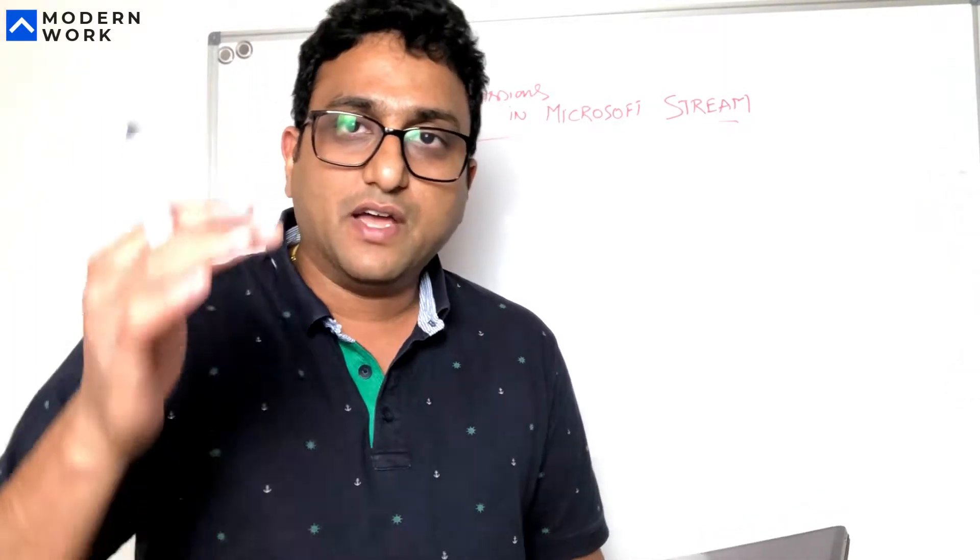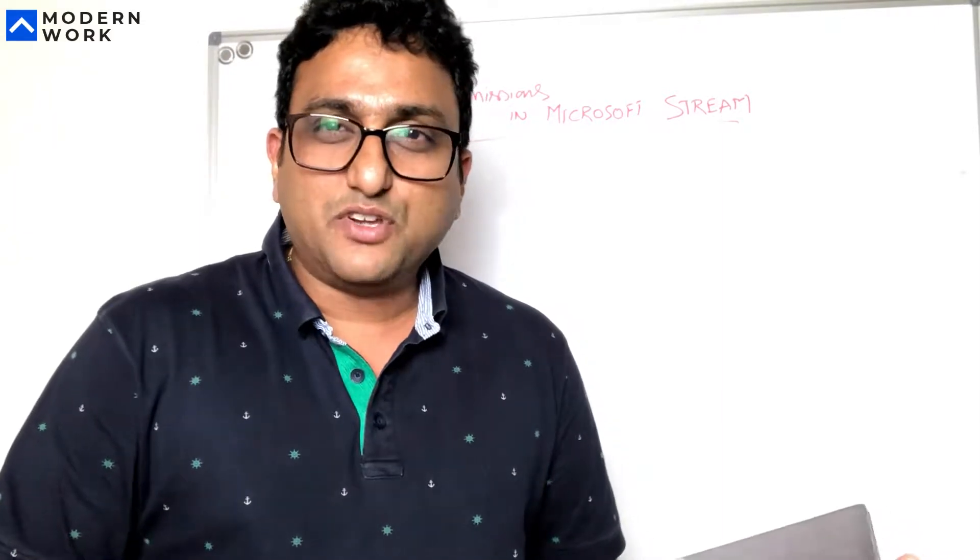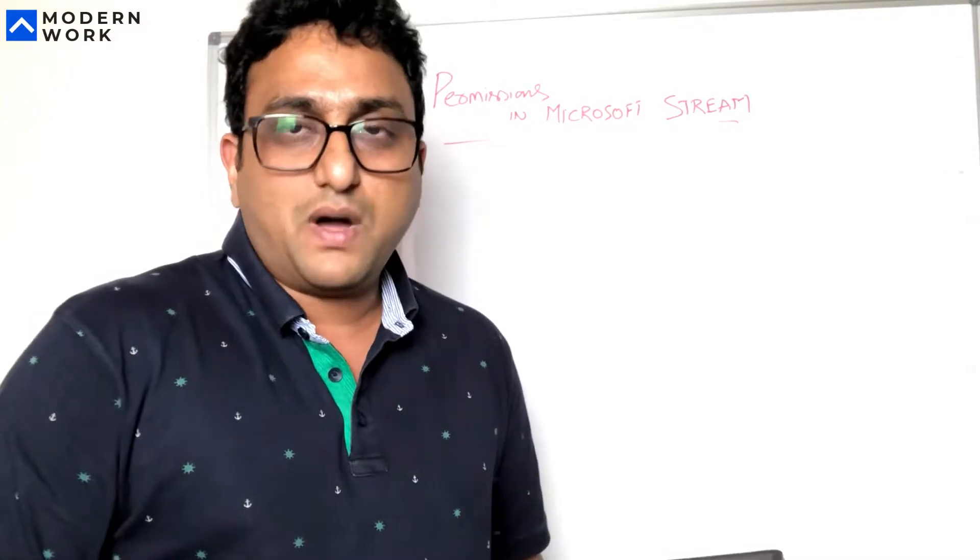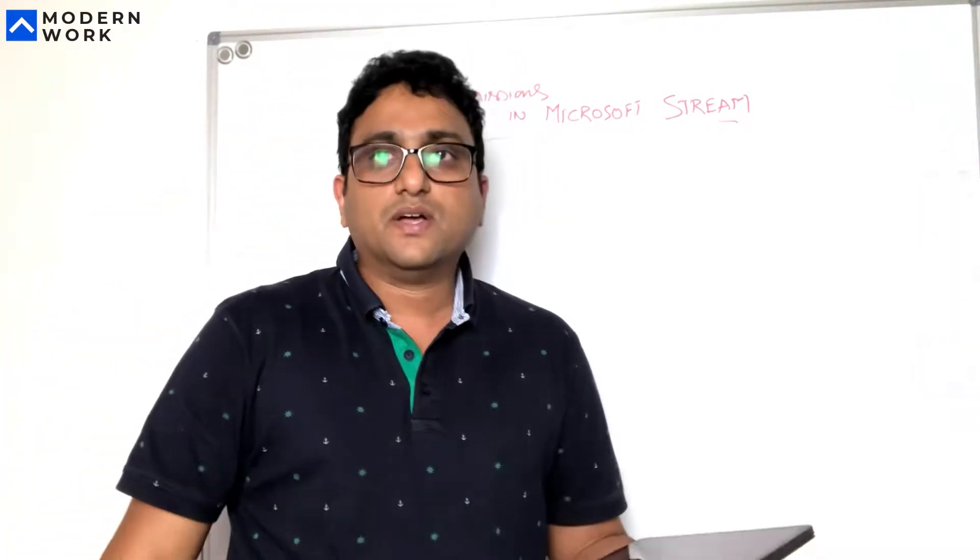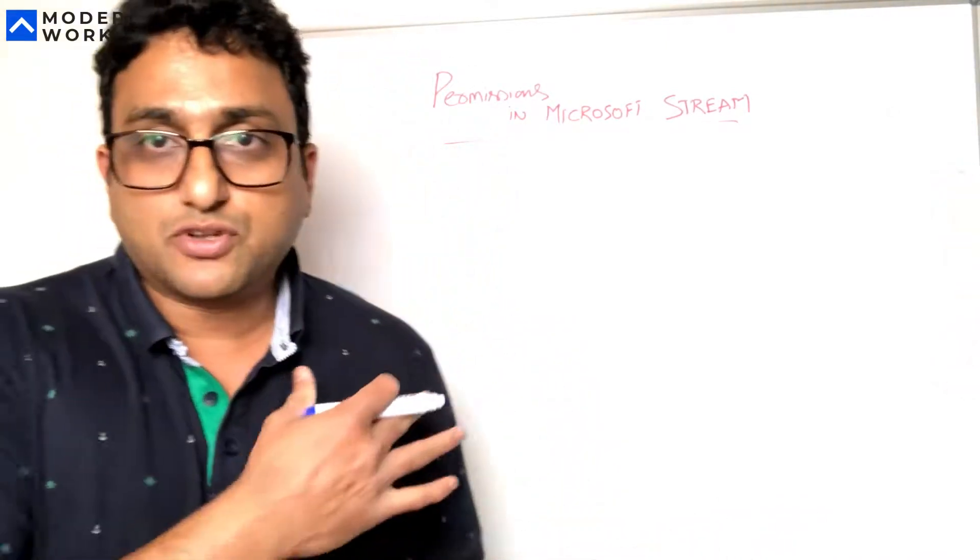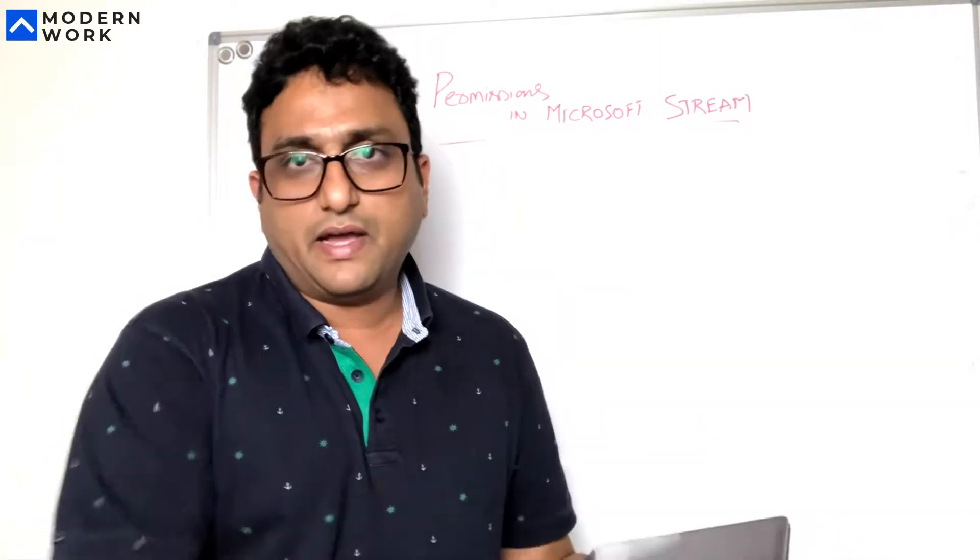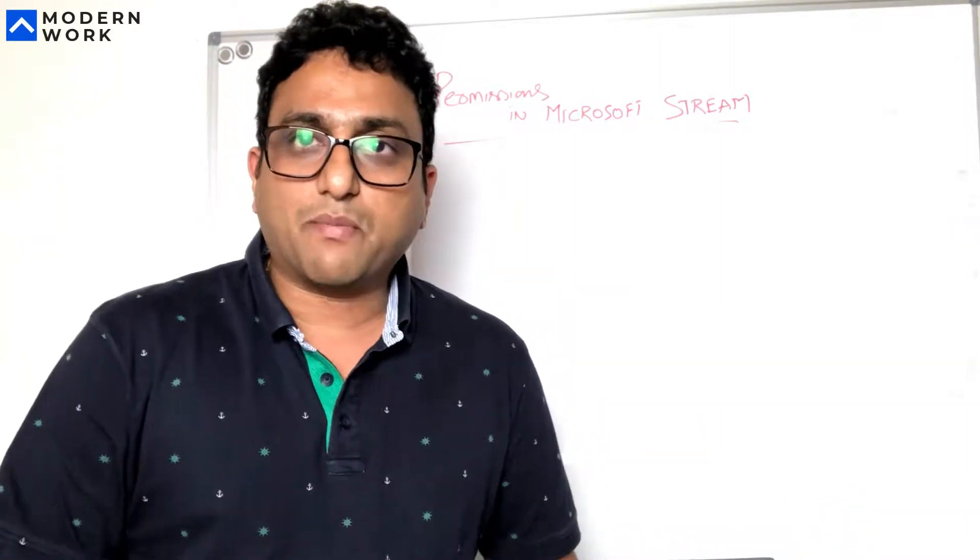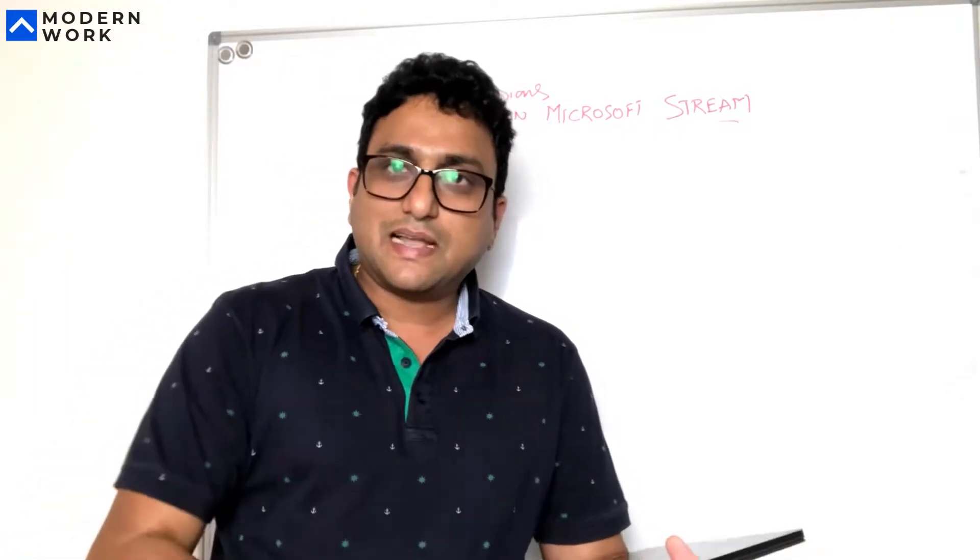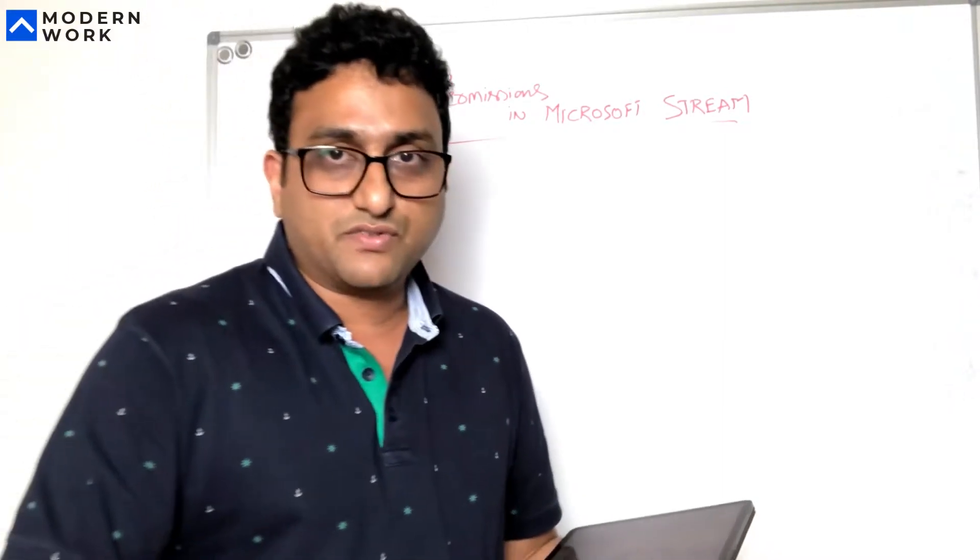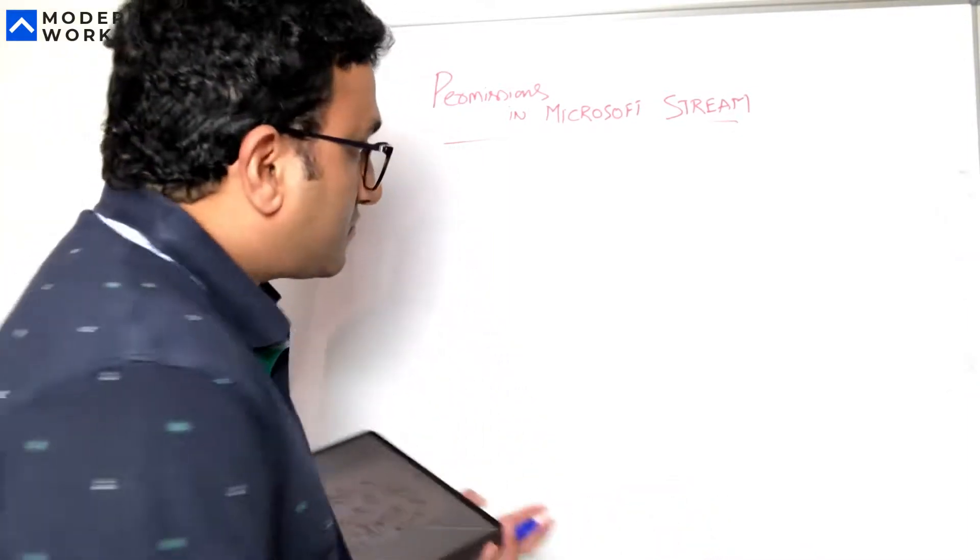I tried to cover everything in a single video but I think it's gonna take me longer, so probably break it down into two parts today and tomorrow. Let's get started. I'm gonna use a whiteboard to explain it because I realized that permissions is a slightly complex topic to understand, so I'm gonna use a whiteboard to just explain the permission structures in Microsoft Stream.